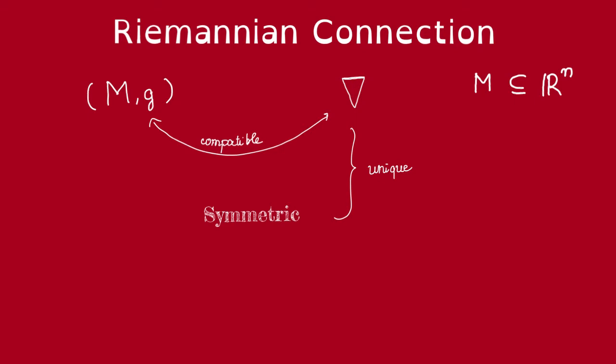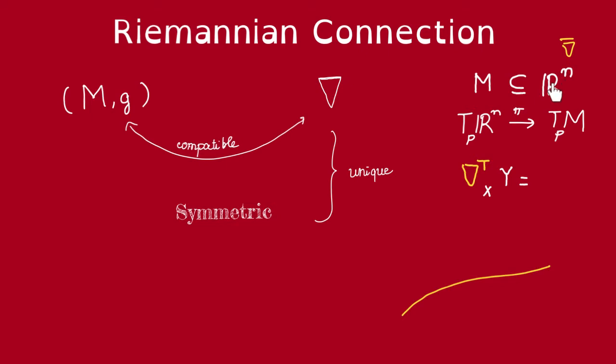How do we figure out which condition to add? The idea is that we want this Riemannian connection to generalize the natural induced connection on M when M is a sub-manifold of R^n. So given the Euclidean connection on R^n, how do we define this natural induced connection on a sub-manifold M? Let's say X and Y are vector fields on M. How would we define this?